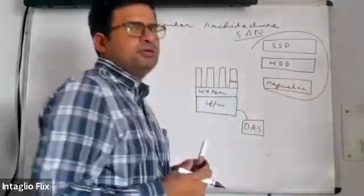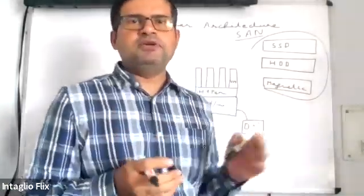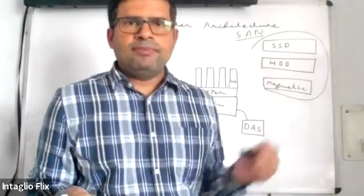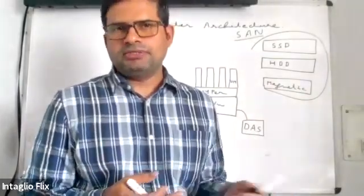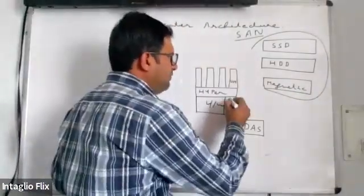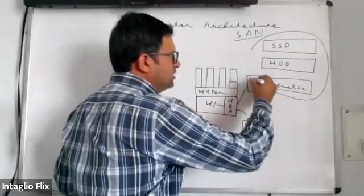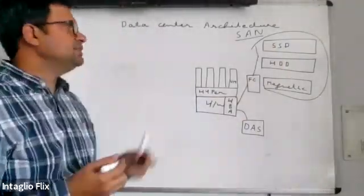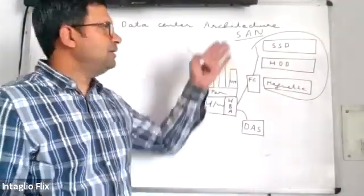SSD is the costliest and fastest drive available today. HDD is cheaper and slower compared to SSD. Magnetic drive technology is almost obsolete, though Amazon still offers it for testing workloads. To connect to SAN storage, the hardware uses an HBA adapter, from which a fiber channel wire goes to the fiber channel switch to reach the back-end storage. SAN is a very costly storage because an entire area is reserved for it.